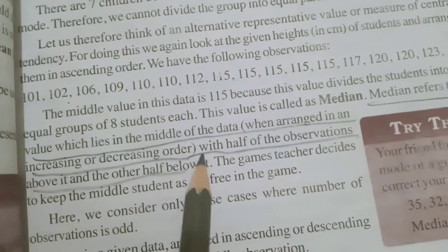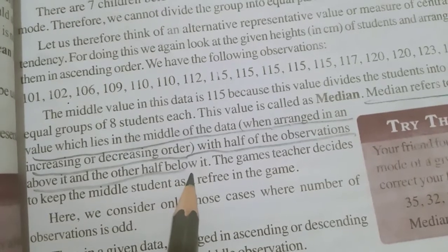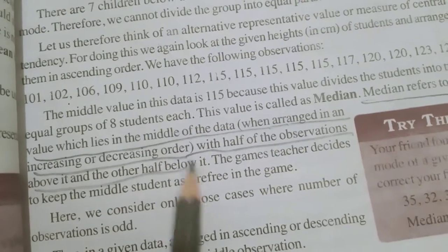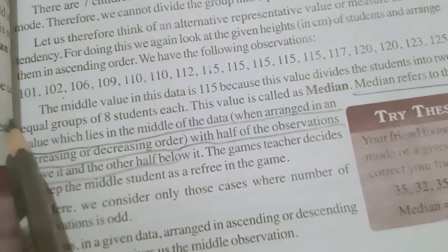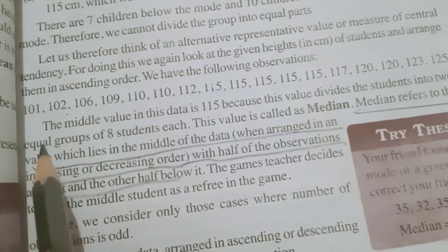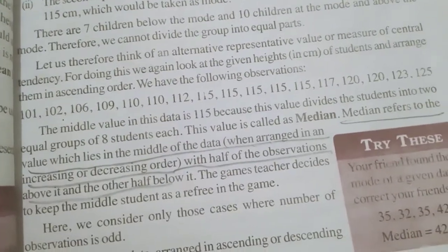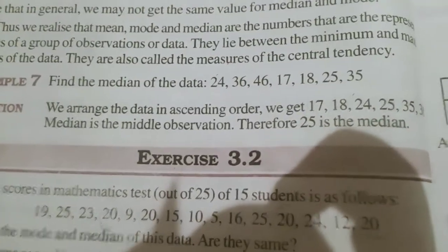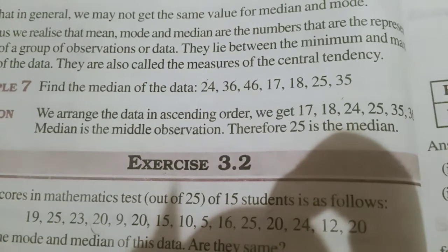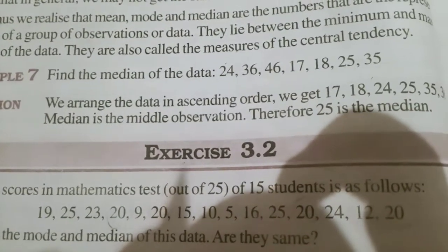Okay, with half of the observations above it and half of the observations below it. If data is arranged horizontally, then half of the data is towards the right side and half of the data towards the left side. Then, that term is nothing but median. Clear? We see some examples. Come on, page number 68 of your textbook. See example 7. Find the median of the data. To find the median, first we arrange the data either in ascending or descending order.